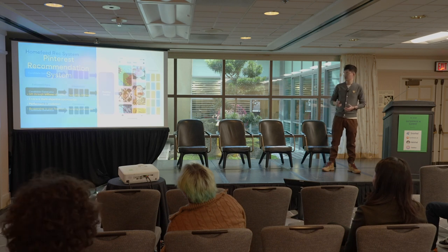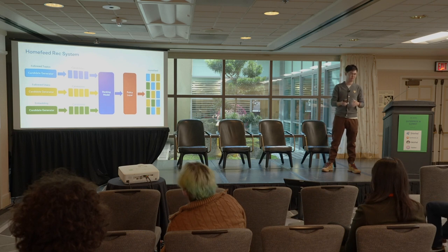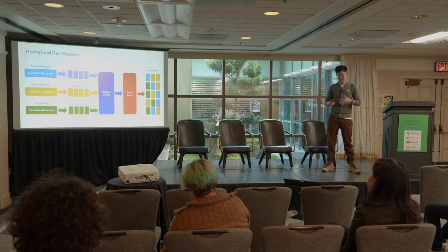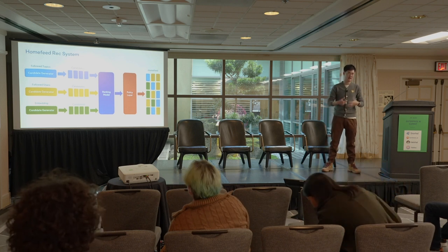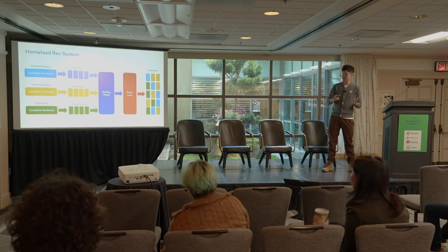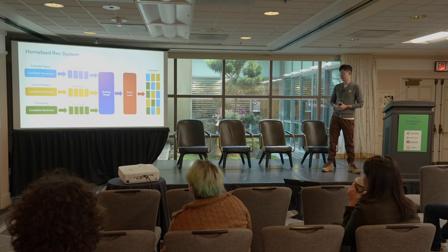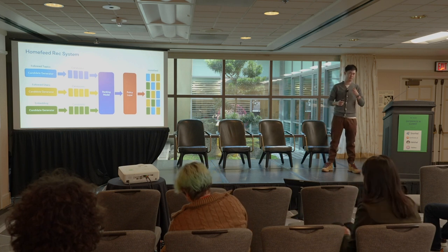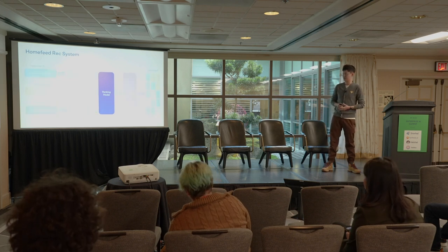So how do we build a system like that? This is an oversimplified view of the home feed recommendation system — roughly three stages. The first stage is candidate generation, where we generate candidates from different sources, for example topics or users that this user follows, and also retrieve relevant candidates from an embedding space trained from our dataset. The candidates are fed into a ranking model, which computes a score for user engagement probability. Then we have a policy layer at the end, where we apply constraints like the quantity of fresh pins to show users. For this talk, let's focus only on the ranking model.